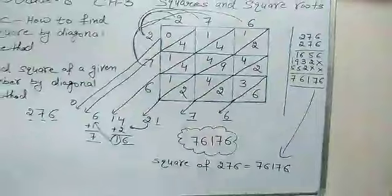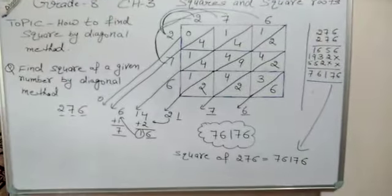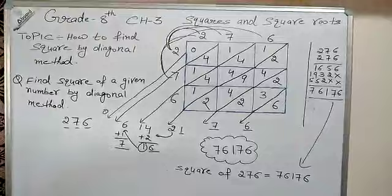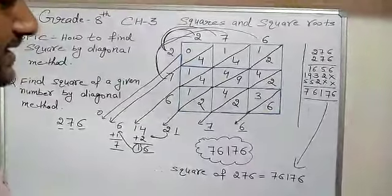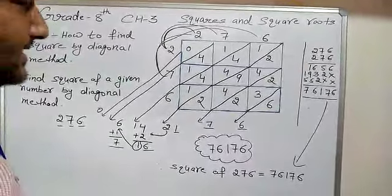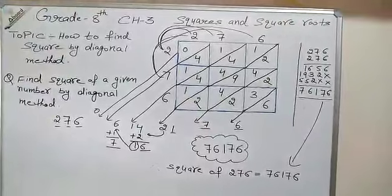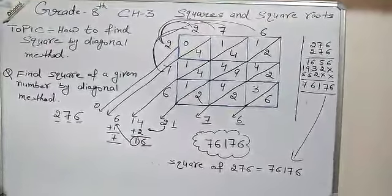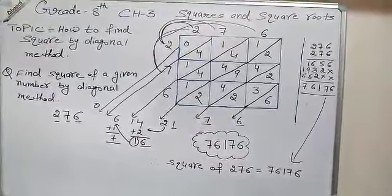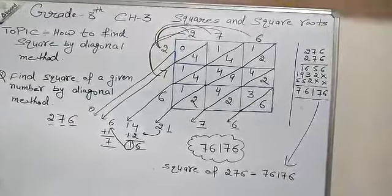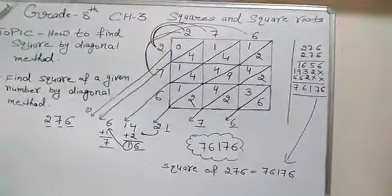So finally, by the diagonal method, the square of 276 equals 76176. Hope you understand how to solve using the diagonal method. Students, try the same type of questions at home. Bye-bye everyone, have a nice day!